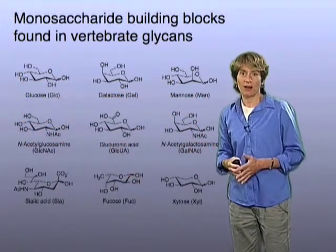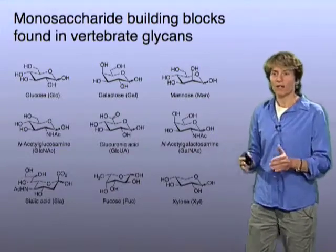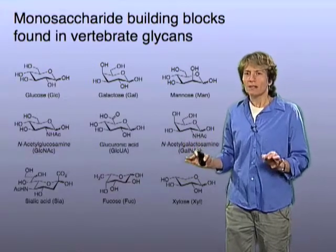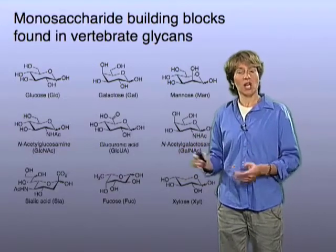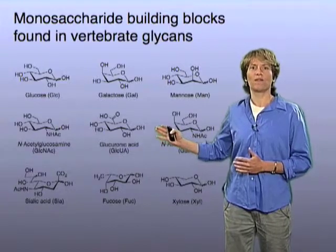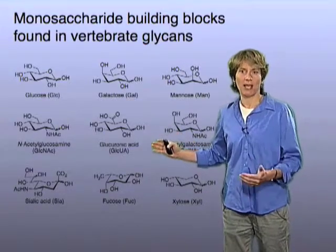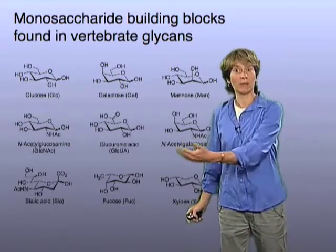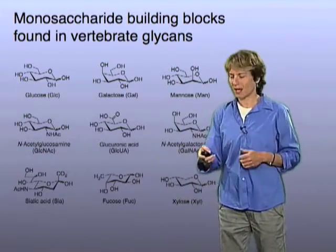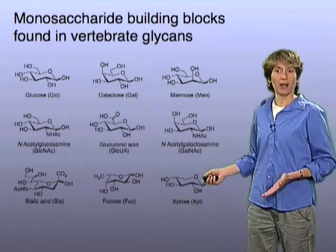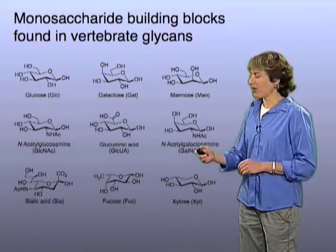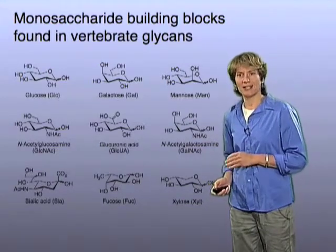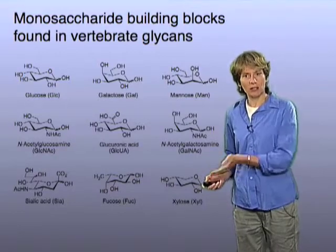Let me tell you about the monosaccharide building blocks. There are many of these sugars in nature, and different organisms have different collections. I'm only showing you the monosaccharides that you would find in vertebrate glycans, which are distinct from those in bacteria or even plants. These are the ones inside our bodies, and there are nine of them — a good number to know, just like there are four nucleotides in your DNA or 20 amino acids in your proteins.